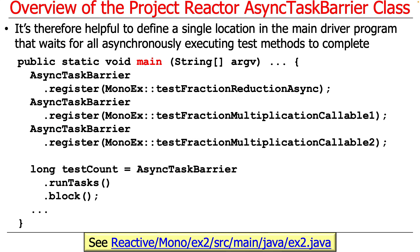Without something like the Async Task Barrier, the main method would fall off the end while a bunch of stuff was still running in the background. When the main method returns in a Java program, anything running in the background will be killed and shut down automatically before it has a chance to complete. Background tasks typically run in daemon threads, and when there are no user threads left but daemon threads remain, Java semantics shut all the daemon threads down before they complete.